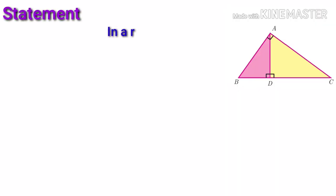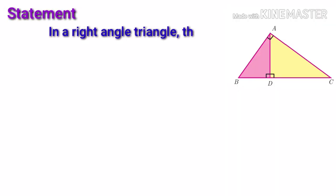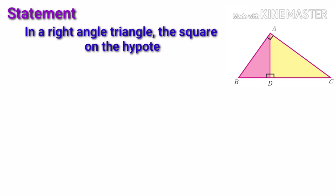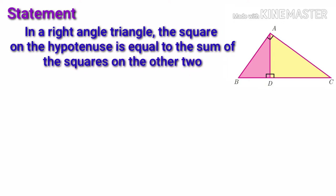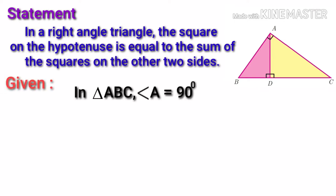Pythagoras theorem states that in a right angle triangle, the square on the hypotenuse is equal to the sum of the squares on the other two sides. In the statement, it is given that in triangle ABC, angle A is equal to 90 degrees.